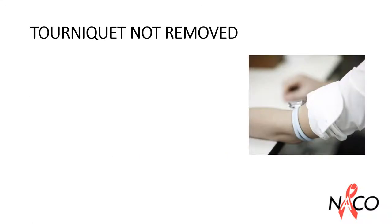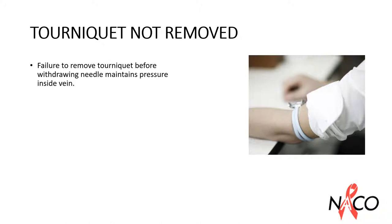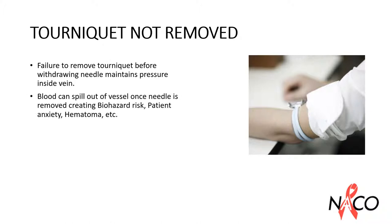Failure to remove the tourniquet before withdrawing the needle maintains pressure inside the vein. Blood can spill out of the vessel once the needle is removed, creating a biohazard risk, patient anxiety, and hematoma. Tourniquet tension should be reduced as soon as the blood starts flowing.